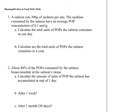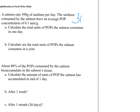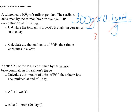Part A: calculate the total units of POPs the salmon consumes in one day. We take 300 grams times 0.1 units of POPs per gram. The grams cancel out, and 300 times 0.1 gives us 30 units of POP for part A.